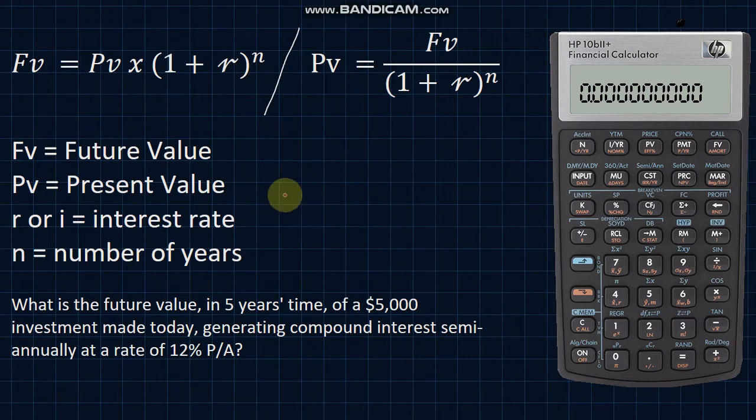Now the 4 variables that we're talking about here are the future value FV, the present value PV, R or I the interest rate, and N the number of years or the number of periods. It's only years if you're working on an annual basis.